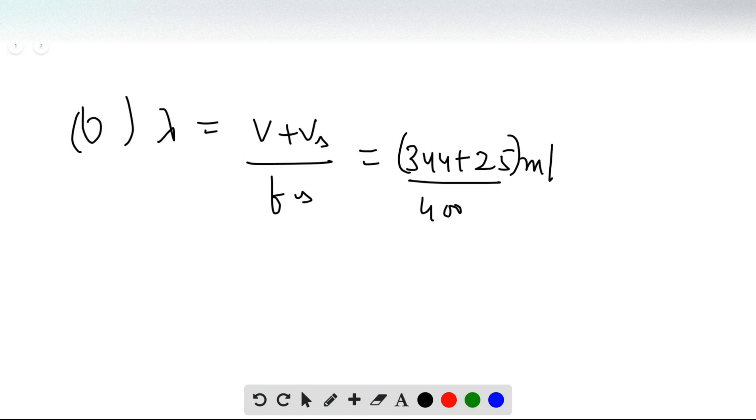Now going back to part B, we have lambda equals V plus VS over FS, which is 344 plus 25 over 400 Hertz, which equals 0.922 meters.